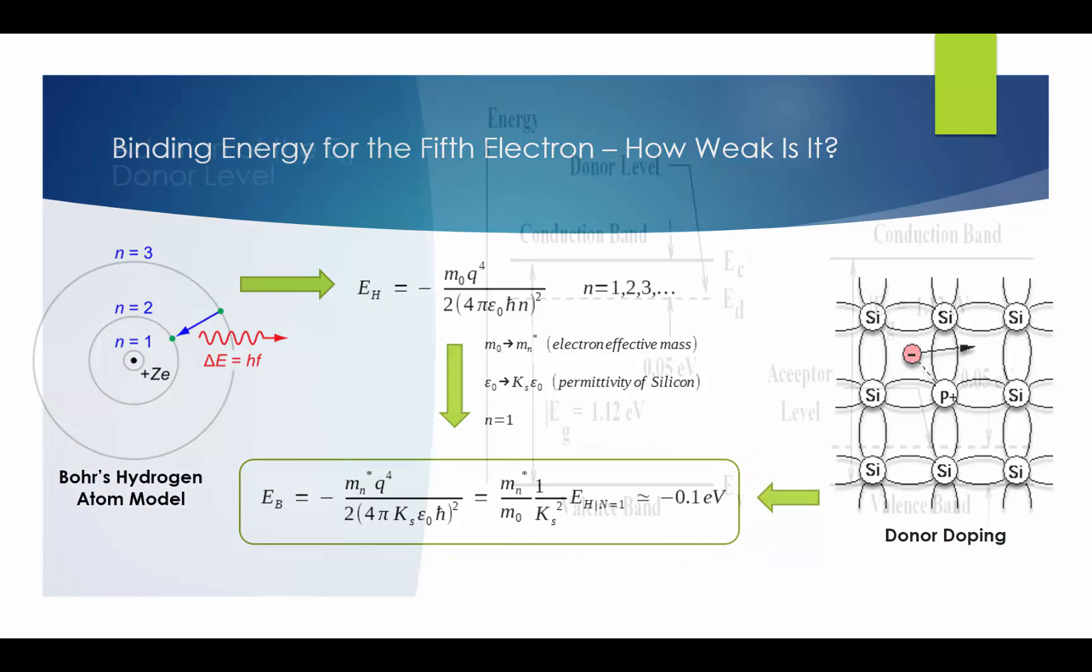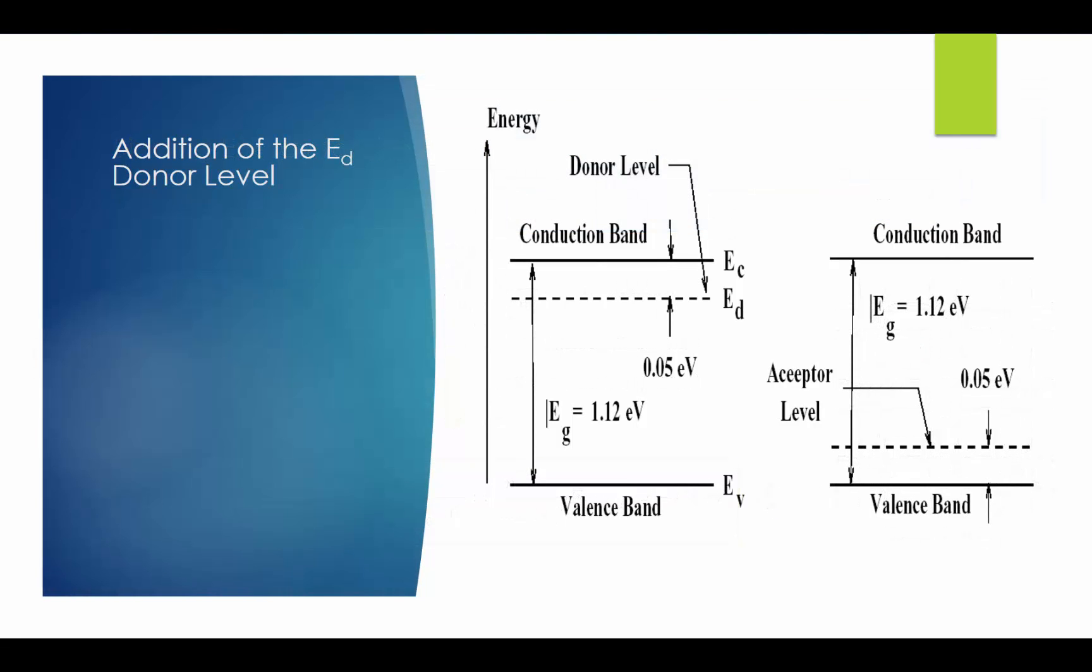Here, we need to pause and think clearly. If the energy absorbed by the electron is exactly the binding energy, the released electron will have the lowest conduction band energy EC, as shown in the picture. So, that means this fifth electron was at an energy level just EB absolute value below the EC conduction band level, as shown by the dashed line.